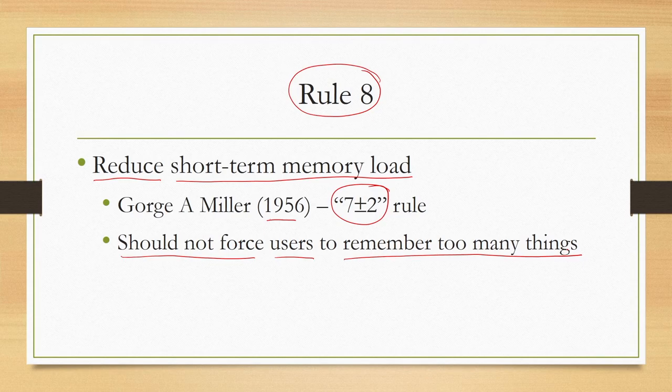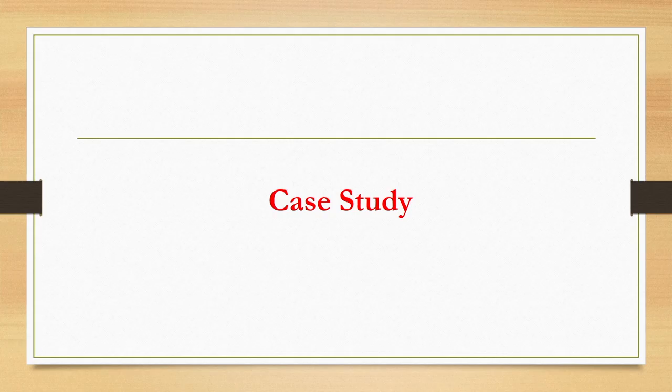These are the 8 golden rules proposed by Shneiderman. While going for any interface design, we should take these rules as a starting point. Whatever our intuition tells us about the design, we should test it with respect to these rules and see whether any are violated. If they are violated, we should refine our design and come up with a modified design. Now let us try to understand the importance of these rules in the context of a system design through a case study.